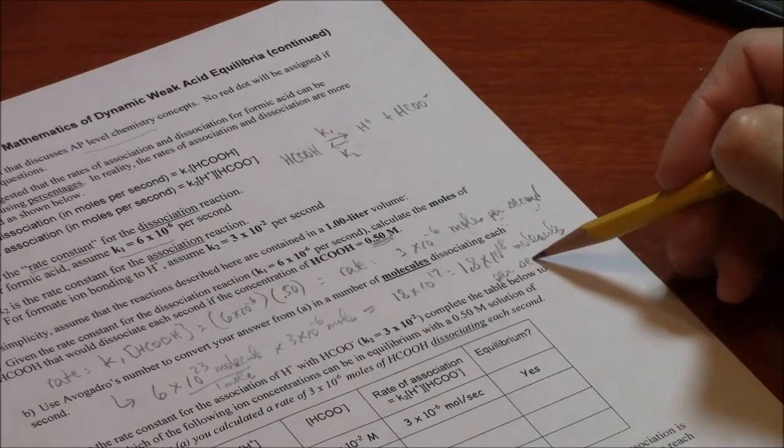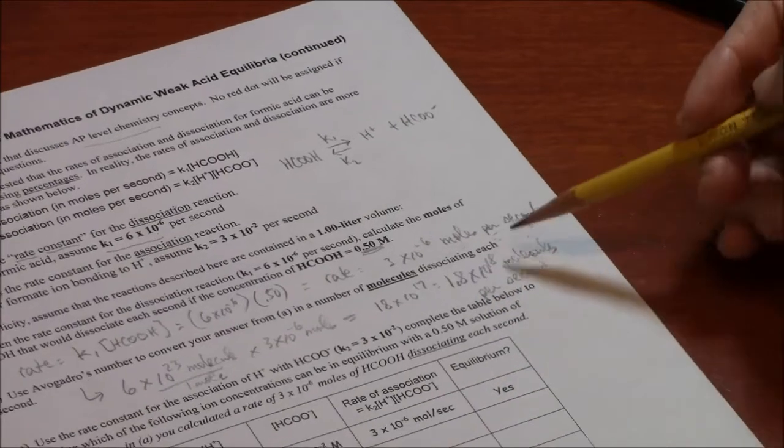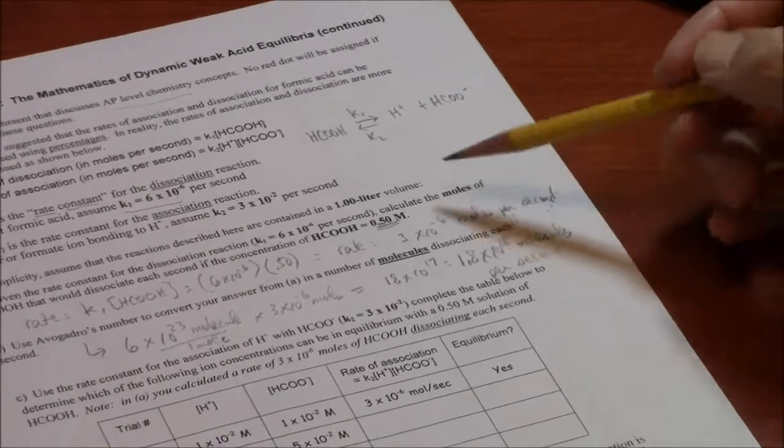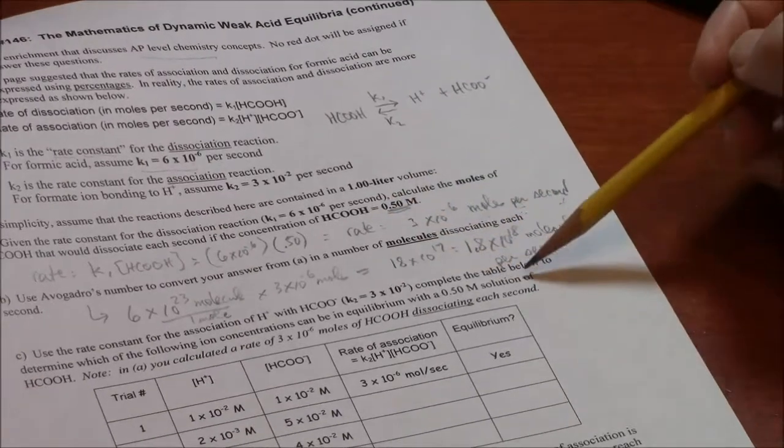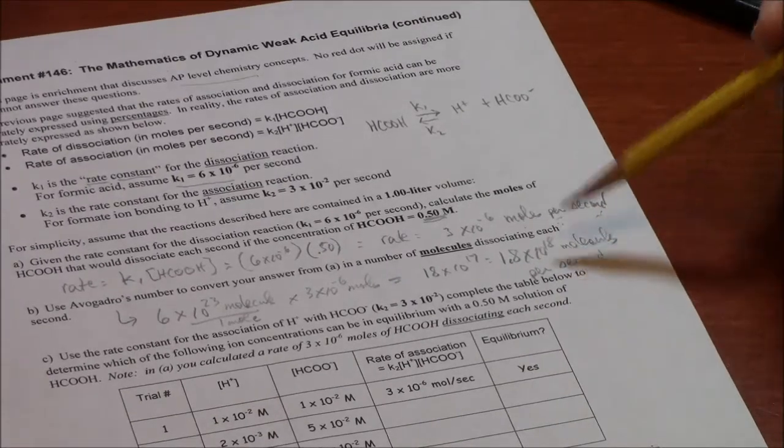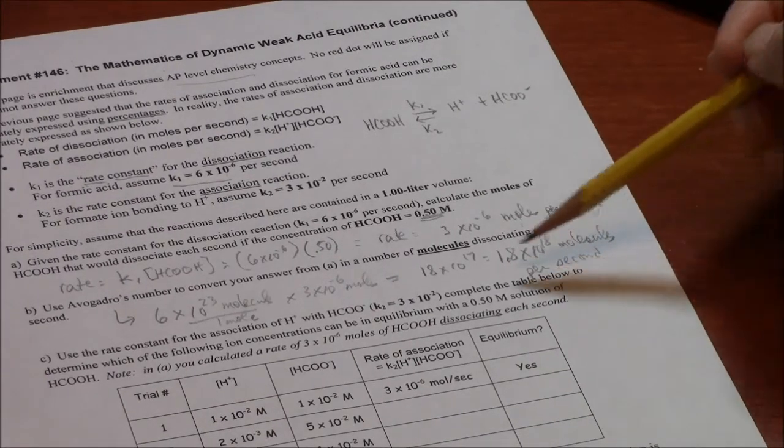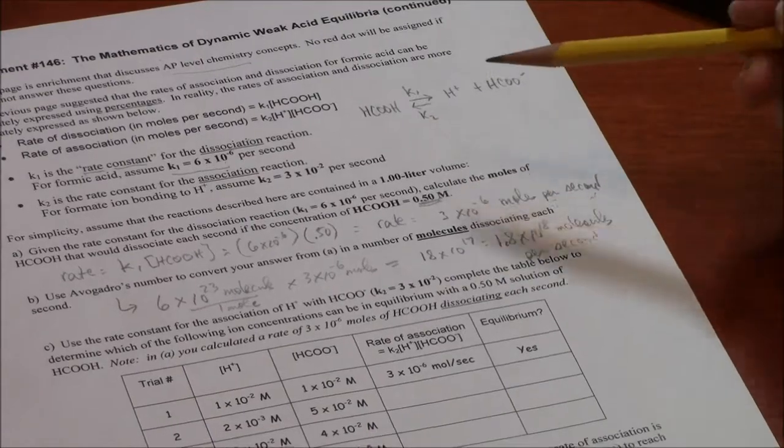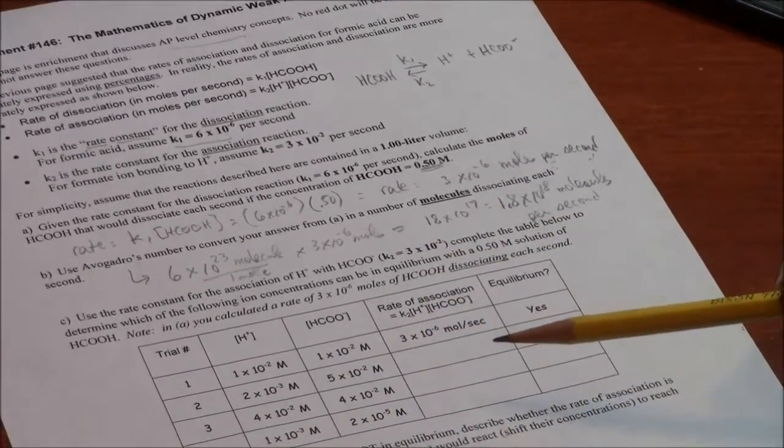So now, what this is saying is that in a beaker that has half molar formic acid, a huge number of molecules are dissociating each second. But if it is at equilibrium, that's balanced by an equal number coming back. And that's what this table is about here in C.